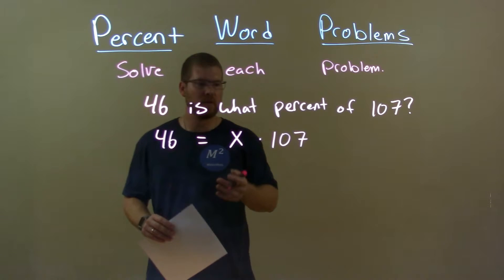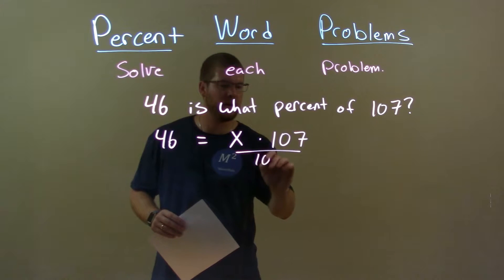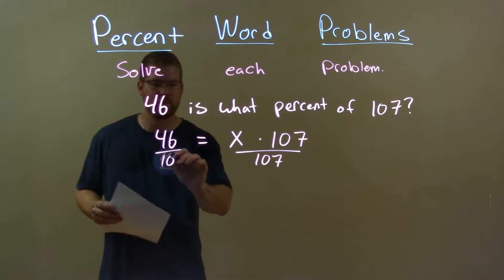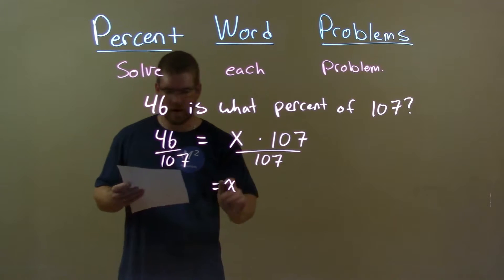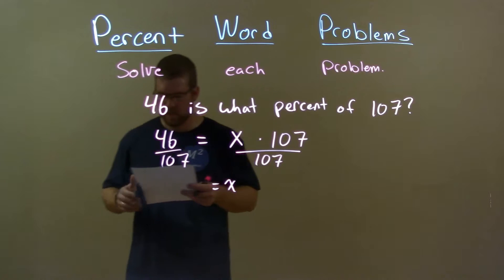To do so, we just divide by 107 on both sides. We're left with x by itself.